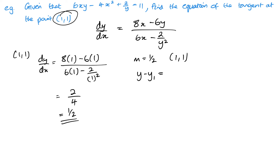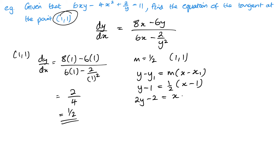It's a tangent, so that is the gradient we want. So m is a half and my coordinate is (1, 1). Using y minus y1 equals m times x minus x1, and multiplying through by 2 to remove the fraction, I take everything to the right to get x minus 2y plus 1 equals 0. And there we have it.